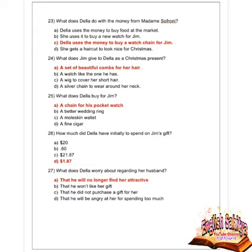Next question: what does Jim give to Della as a Christmas present? Options are a set of beautiful combs for her hair, a watch like the one he has, a wig to cover her short hair, and a silver chain to wear around her neck. Option A is correct — a set of beautiful combs for her hair.